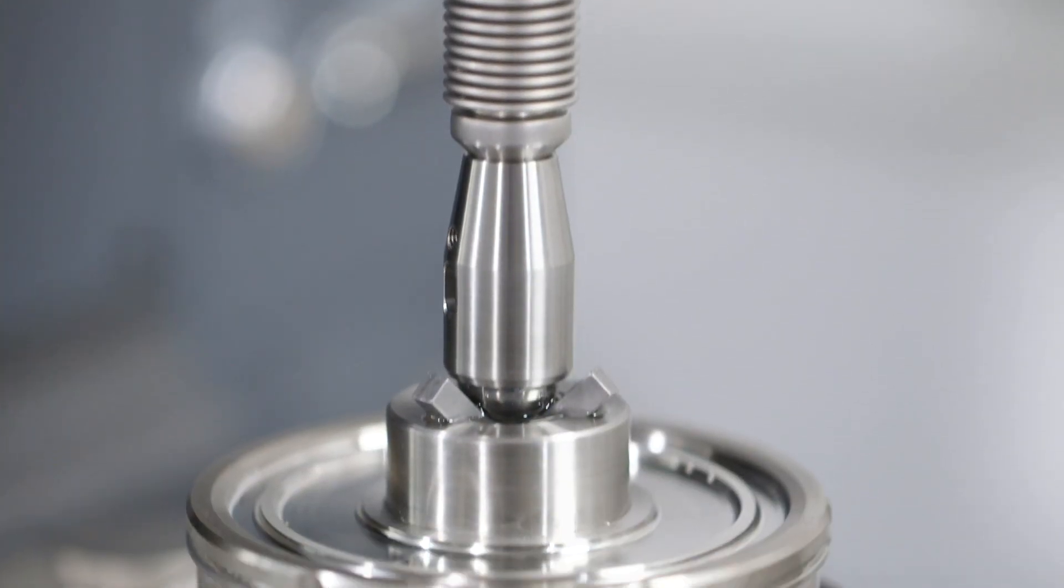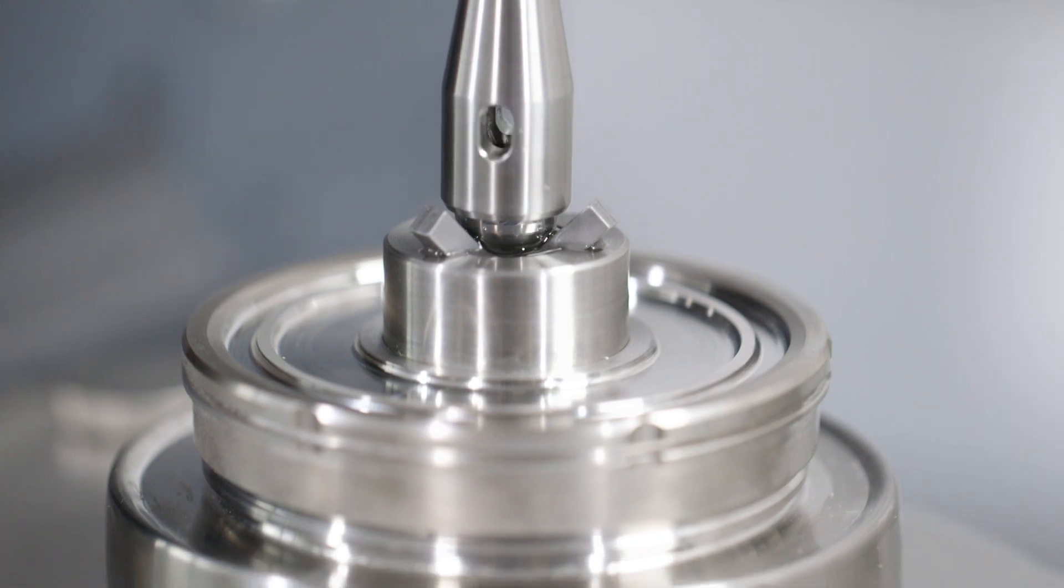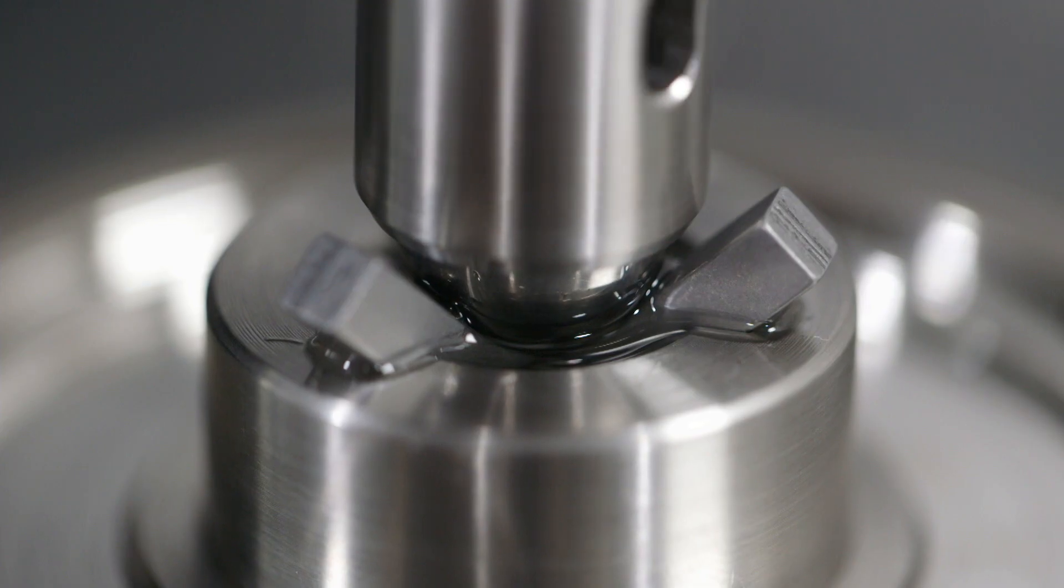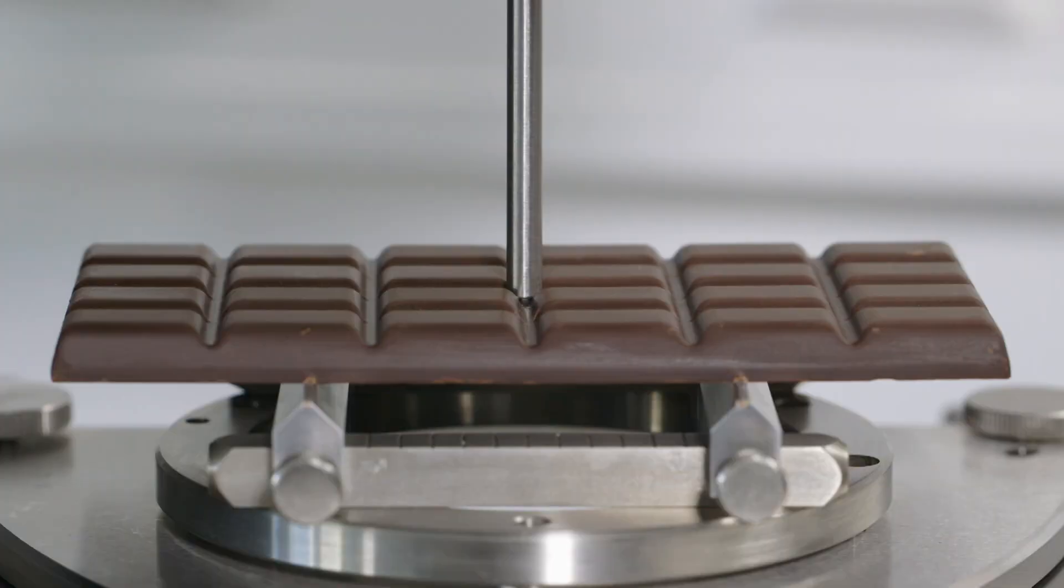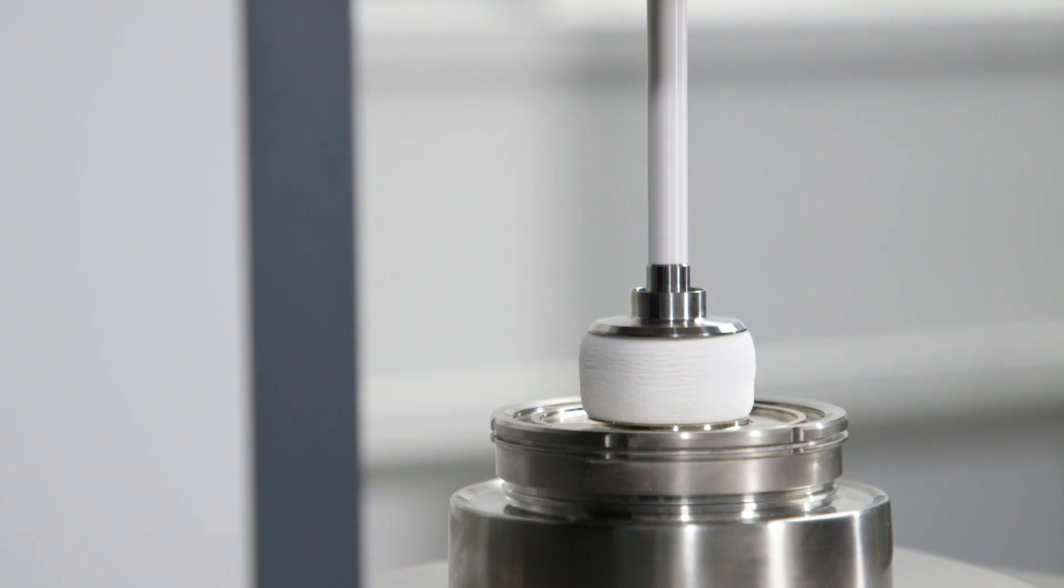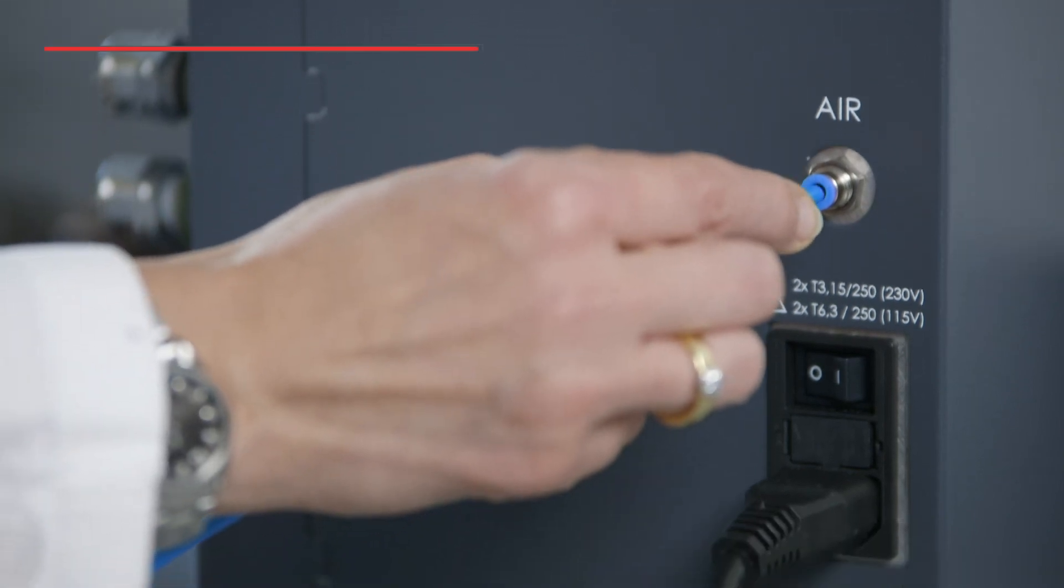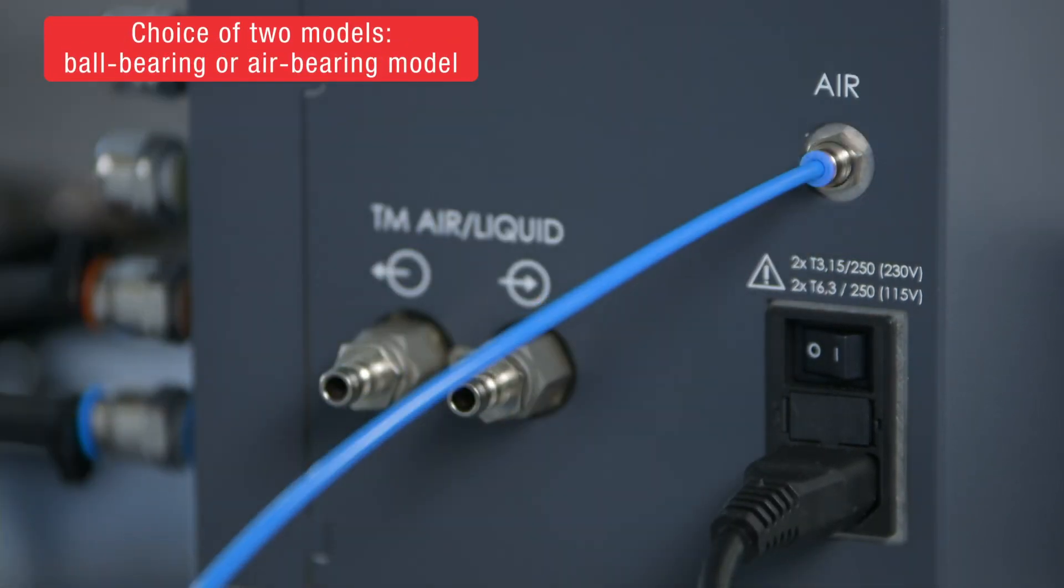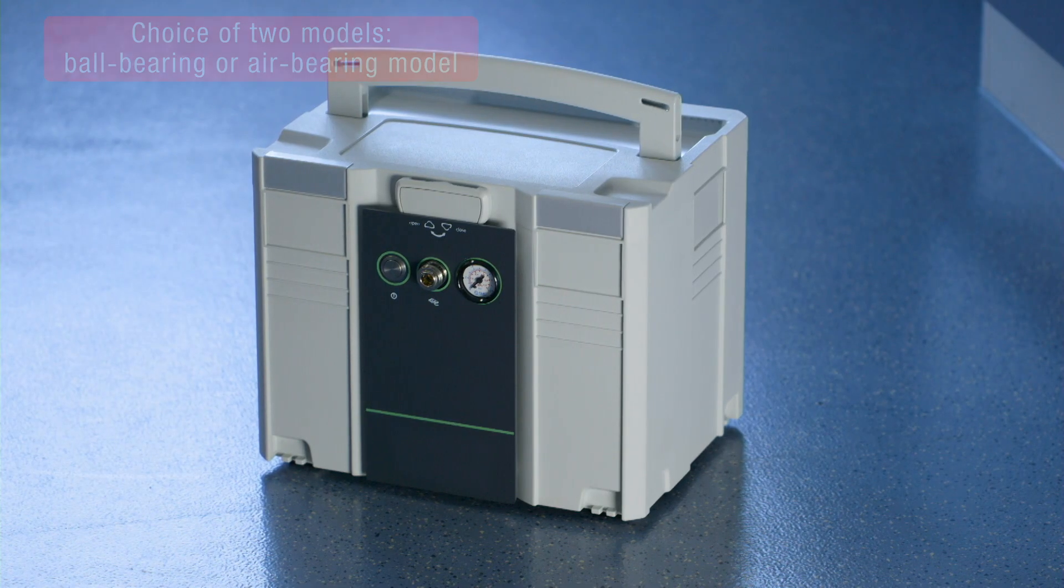Extended measuring capabilities include tribology measurements for testing friction, lubrication and wear, or texture analysis for bending, breaking or squeezing tests. Two versions, ball-bearing or air-bearing model, help address multiple applications.